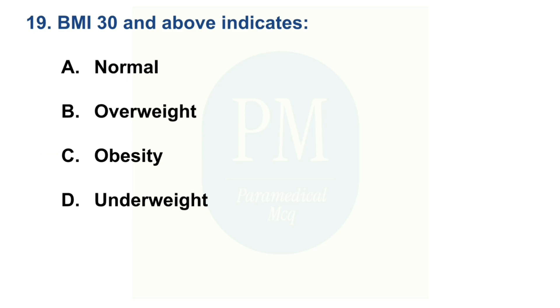BMI 30 and above indicates — Option A: normal. Option B: overweight. Option C: obesity. Option D: underweight. The correct option is Option C: obesity.